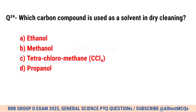Question No. 29. Which carbon compound is used as a solvent in dry cleaning? Correct option is C. Tetrachloromethane.